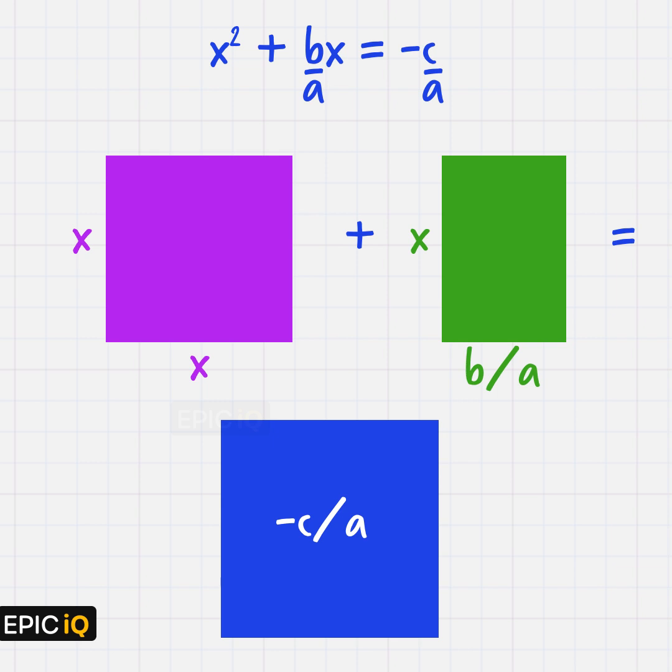Now, we use a clever trick. We split the rectangle with sides x and b/a into two equal parts. Each of these rectangles will now have sides x and b/2a.